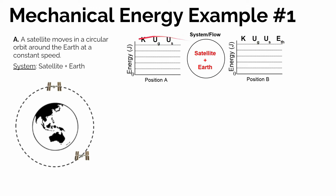First example: a satellite moves in a circular orbit around the earth at a constant speed. If it's in a circular orbit, it's maintaining the same height above the earth and moving at a constant speed. Let's make an energy bar graph to think through what's going on. The system is the satellite and the earth. It's moving, so it's got some energy stored in the kinetic energy account, and it's at a height above zero, so there's energy stored in the gravitational potential energy account at position A. At another position, it's at the same height and the same speed, so both kinetic energy and gravitational potential energy remain constant.